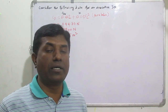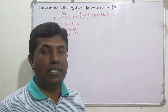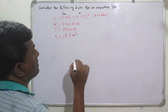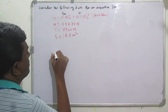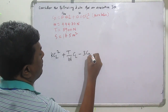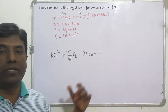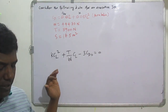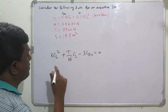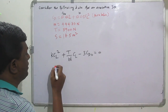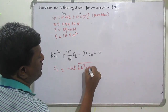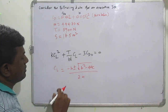First of all, let us simplify that equation and get the solution. In the previous class, the conditions for obtaining the maximum rate of climb when the thrust is constant — that is nothing but K·CL² plus (T/W)·CL minus 3·CD₀ equal to 0. This is the equation we derived in the previous class. This is a quadratic equation, and the solution for the quadratic equation is CL = (−B ± √(B² − 4AC)) / 2A.